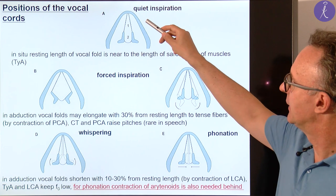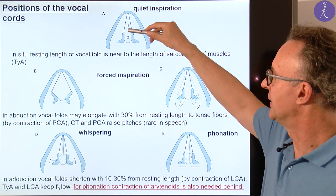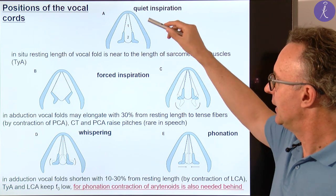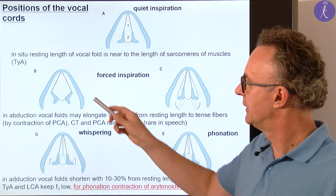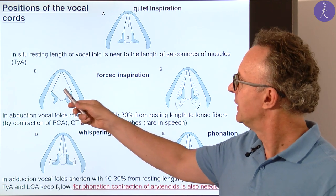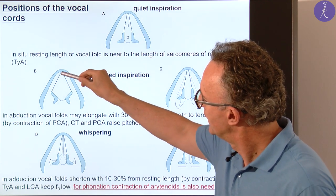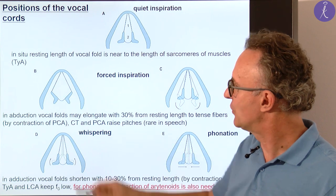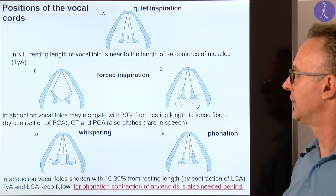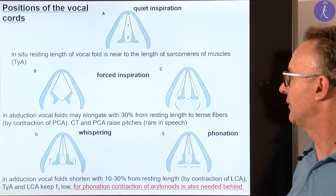This shows the shape of the rima glottidis in quiet inspiration. The anterior intermembranous part is an elongated triangle. The posterior intercartilaginous part is rather a rectangle. In forced inspiration, the anterior part becomes a larger triangle and the posterior part also becomes a triangle. The distance, which was shorter in the resting phase, is now elongated. That's why this rotation also stretches the vocal fold — we have an increase of approximately 30% in length.